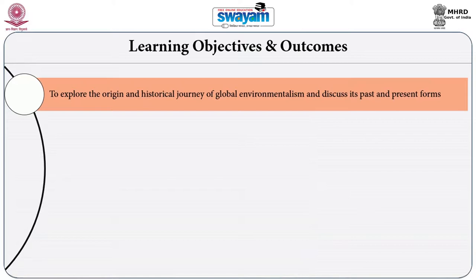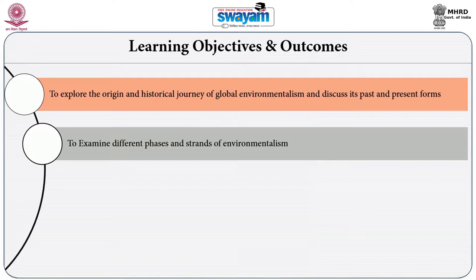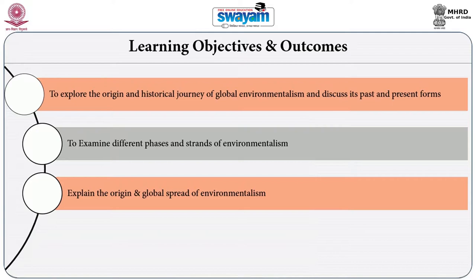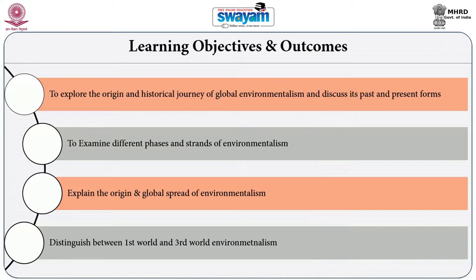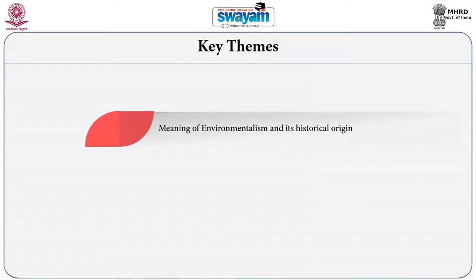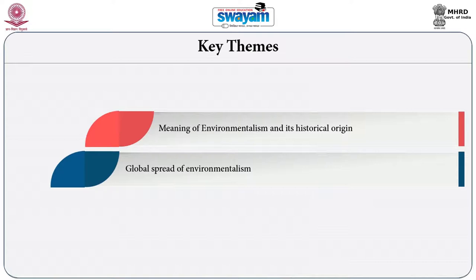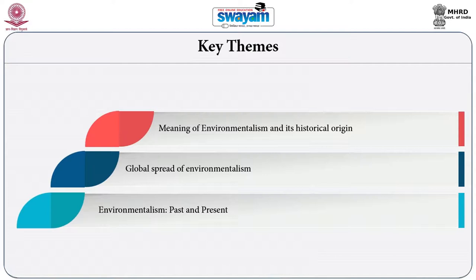The broad objective of today's module is to explore the origin and historical journey of global environmentalism and discuss its past and present forms. It also aims to examine different phases and strands of environmentalism. After completing this module, you will be able to explain the origin and global spread of environmentalism and distinguish between the first world and third world varieties of environmentalism. In today's class, we will discuss three topics: the meaning and historical emergence of environmentalism, its global spread, and its different phases or waves.